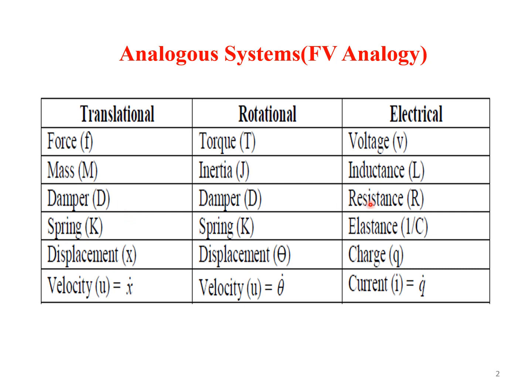Mass is considered as equivalent to inductance. Damper D is considered as equivalent to resistance. Spring constant K is considered as equivalent to the reciprocal of capacitance, which is termed as elastance. Displacement X is considered as equivalent to charge Q, and velocity is considered to be equivalent to current I. You need to remember this.